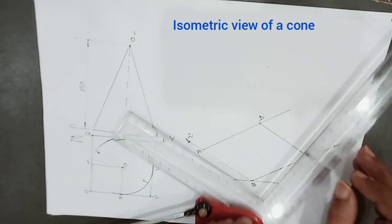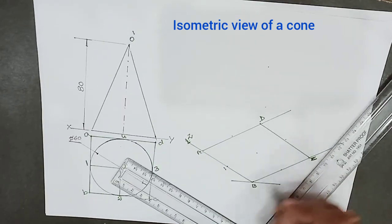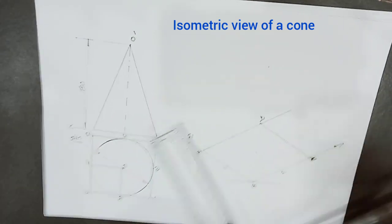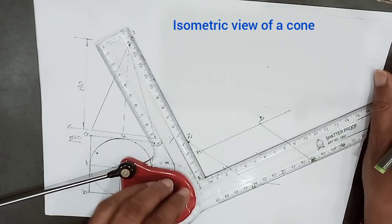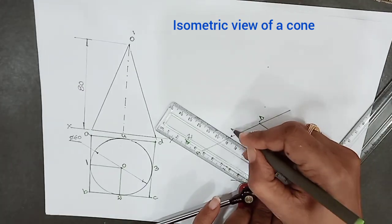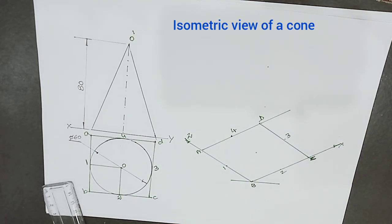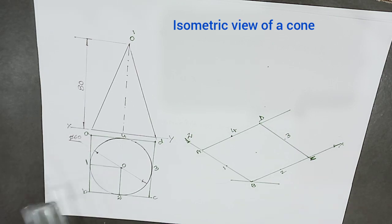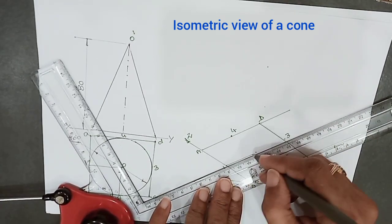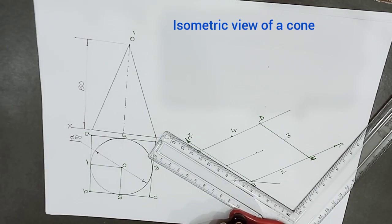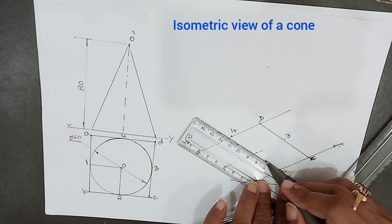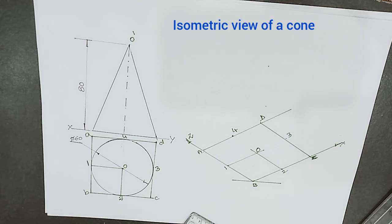For locating point O, draw a line parallel to BC passing through point 1, and parallel to AB passing through point 2. Their intersection is O.